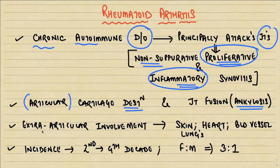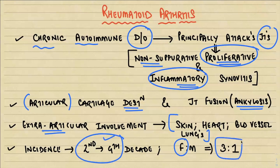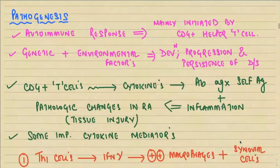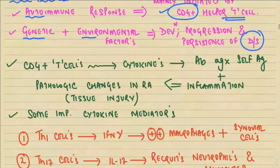In the pathogenesis of rheumatoid arthritis, it is mainly initiated and propagated by the CD4+ helper T-cell, the major protagonist. There is also genetic and environmental predisposition that helps in the development, progression, and persistence of the disease. The CD4+ T-cells, being the commissioners of police, don't act directly but release a plethora of cytokines causing many pathological changes. These cytokines stimulate antibody secretion from plasma cells, and these antibodies act against self-antigens. Both antibodies and cytokine-mediated inflammation are responsible for tissue injury in RA.